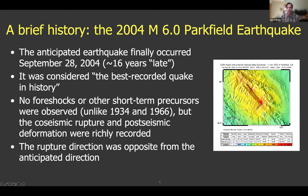Based on the original model, the 2004 earthquake was 16 years late — in quotation marks, because the earthquake comes when it comes. This was considered in many ways the best-recorded earthquake in history, and we learned a lot from it. Unlike the 1934 and 1966 earthquakes, we did not see foreshocks or other short-term precursors. The co-seismic rupture and post-seismic deformation were recorded in rich detail. Among the surprises, the rupture direction was opposite to the widely anticipated direction — it ruptured from south to north instead of north to south.